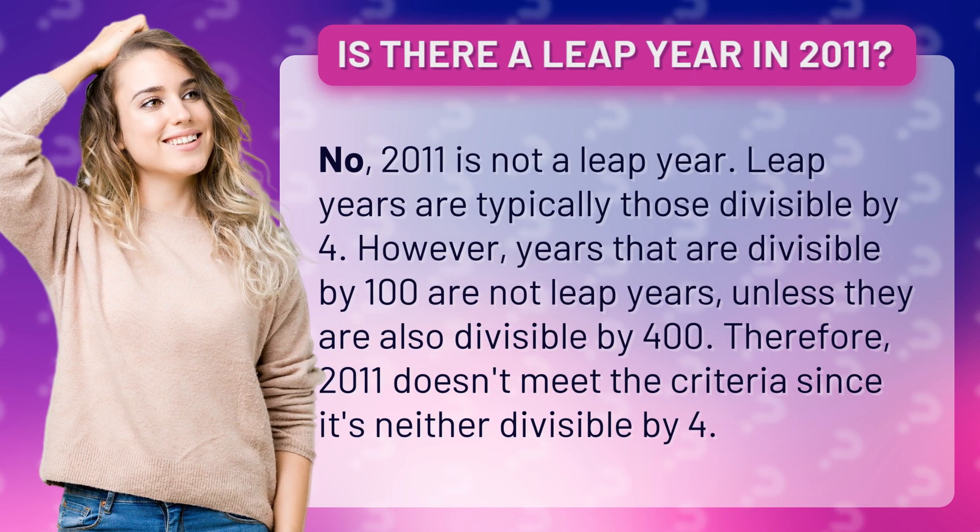Leap years are typically those divisible by 4. However, years that are divisible by 100 are not leap years, unless they are also divisible by 400. Therefore, 2011 doesn't meet the criteria since it's not divisible by 4.